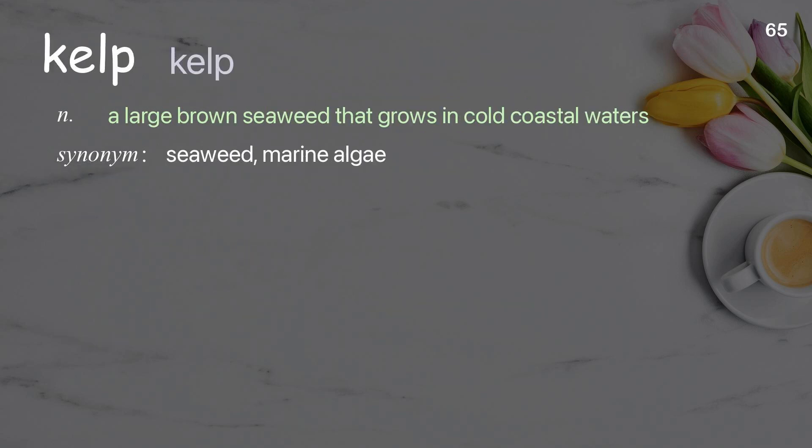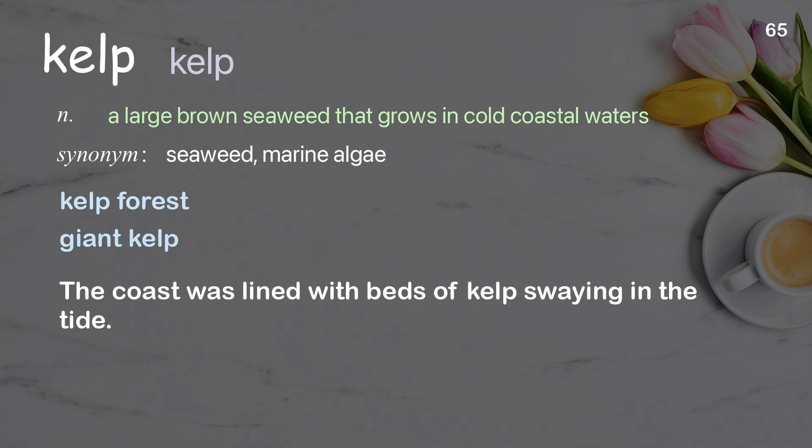Kelp: A large brown seaweed that grows in cold coastal waters. Examples: kelp forest, giant kelp. The coast was lined with beds of kelp swaying in the tide.